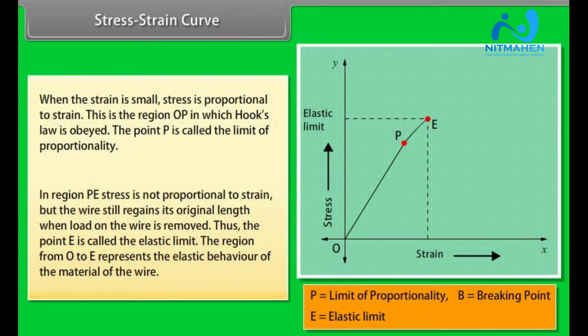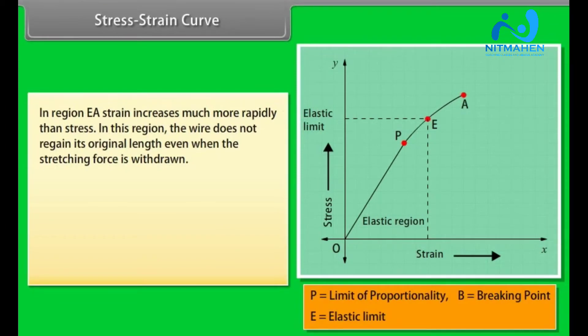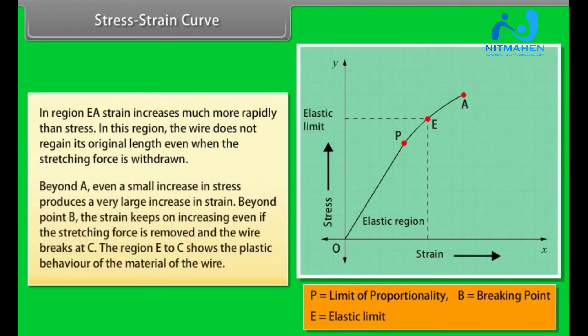The region from O to E represents the elastic behavior of the material of the wire. In region EA, strain increases much more rapidly than stress. In this region the wire does not regain its original length even when the stretching force is withdrawn. Beyond A, even a small increase in stress produces a very large increase in strain. Beyond point B, the strain keeps on increasing even if the stretching force is removed and the wire breaks at C. The region E to C shows the plastic behavior of the material of the wire.